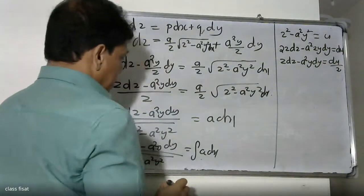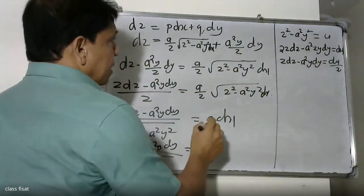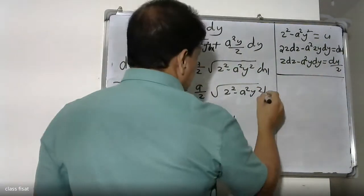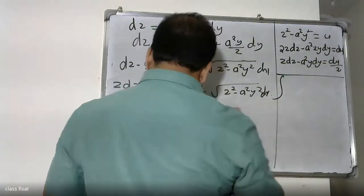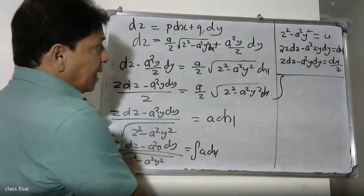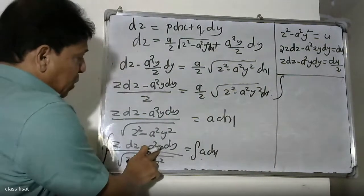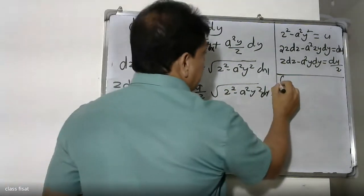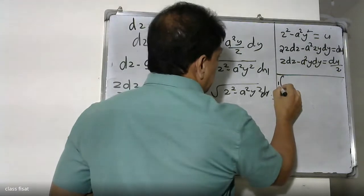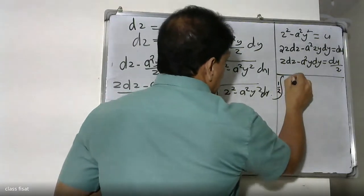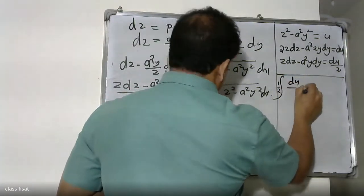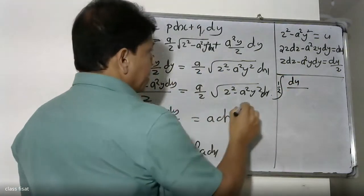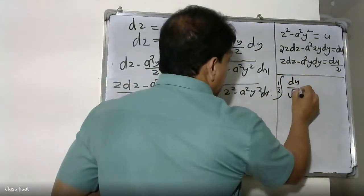Let u equal Z squared minus S squared y squared. Then 2Z dz minus S squared times 2y dy equals du, so Z dz minus S squared y dy equals du over 2. Substituting: the left-hand side becomes (1/2) du divided by root u.